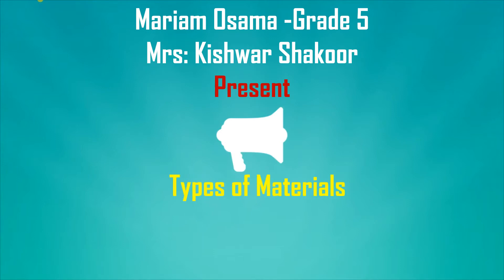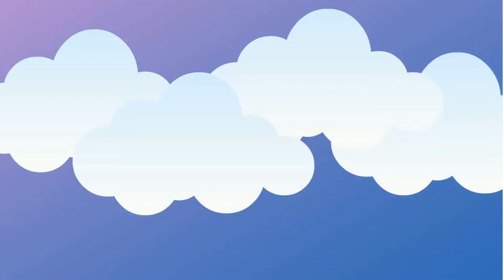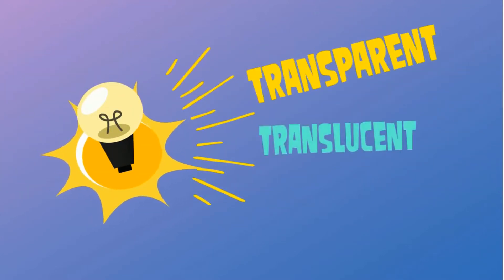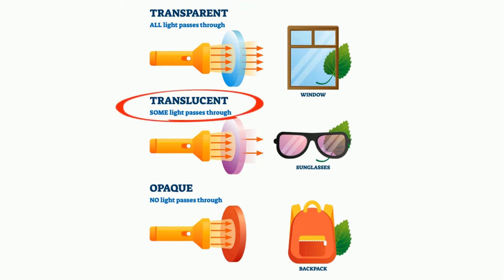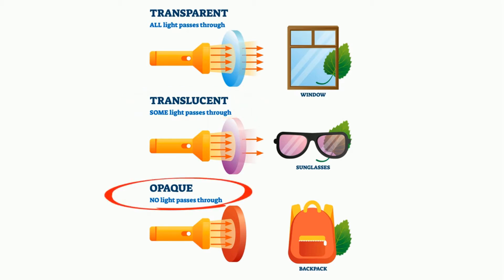Types of Materials: Transparent, Translucent, and Opaque. Transparent materials make all light pass through and reflect all light, so they don't make any shadow — like windows. Translucent materials make some light pass through and reflect some light, so they make some shadow — like sunglasses. Opaque materials don't make light pass through and they absorb all light, so they make a black shadow — like a backpack.